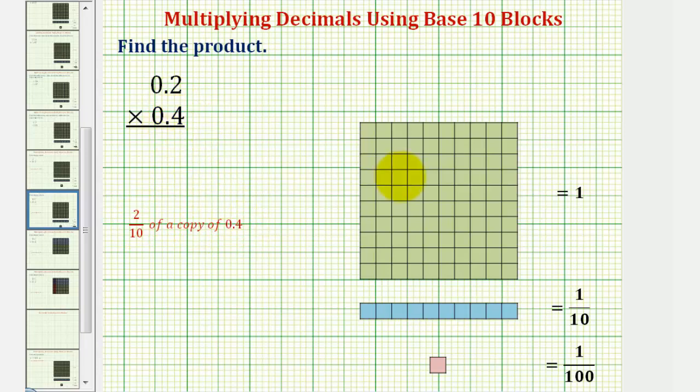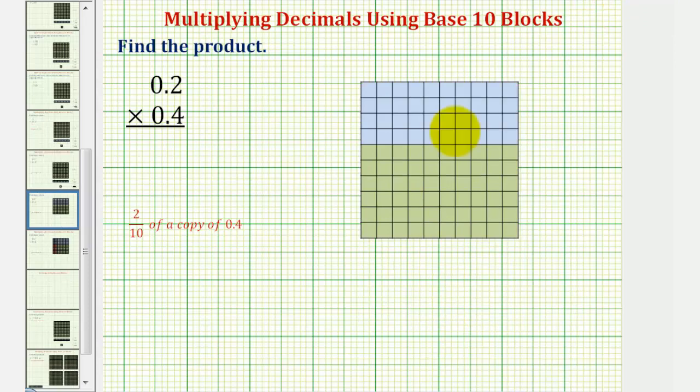To model this using base 10 blocks, or if we're sketching this on paper, we'd begin by modeling 4 tenths. And because 1 long equals 1 tenth, we can model 4 tenths using 4 longs. So if we model this on top of the flat, this would be our model for 4 tenths.